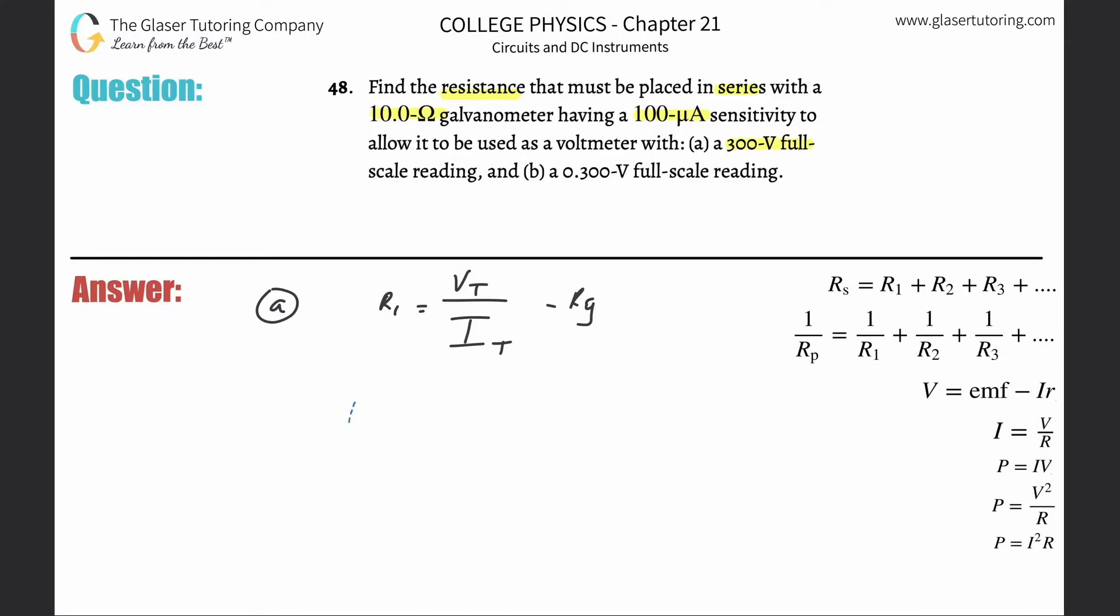Now let's plug it in. R1 will equal the total voltage - they told us the full scale rating is 300 volts - divided by the current. They gave us 100 milliamps, so be careful, you need that in amps, so it's 100 times 10 to the minus 6th, minus the resistance of that galvanometer which was 10.